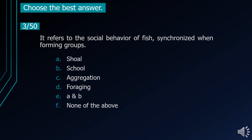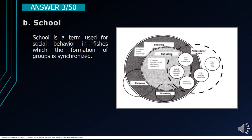Number 3. It refers to the social behavior of fish, synchronized when forming groups. A. Shoal. B. School. C. Aggregation. D. Foraging. E. A and B. F. None of the above. The correct answer is letter B, School. School is a term used for social behavior in fishes in which the formation of groups is synchronized.